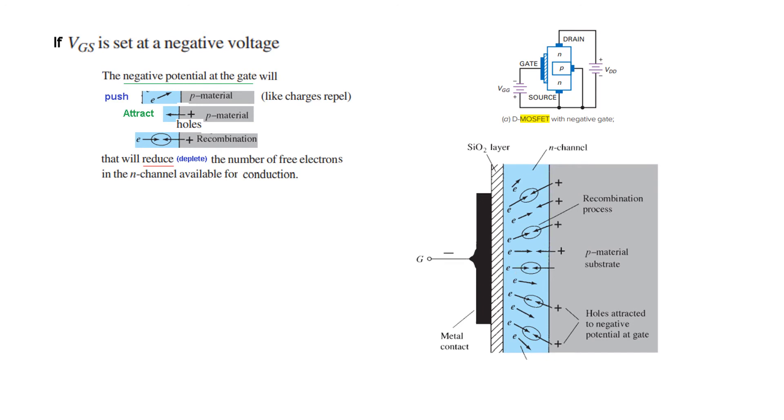That will reduce or deplete the number of free electrons in the N-channel. So electrons will reduce. The resulting level of drain current is therefore will reduce, so the current will reduce. And as we can see from here as we keep on increasing the negative voltage at the gate the current is reducing. So this is the working in the depletion mode.